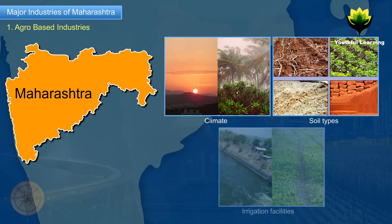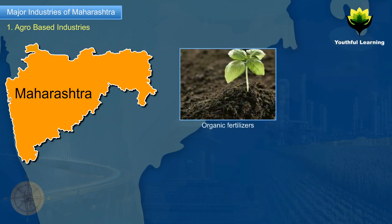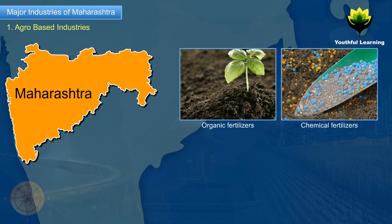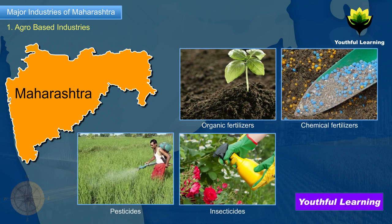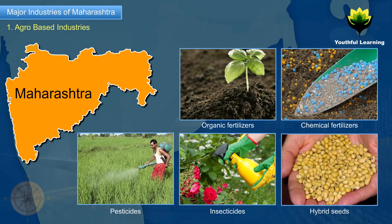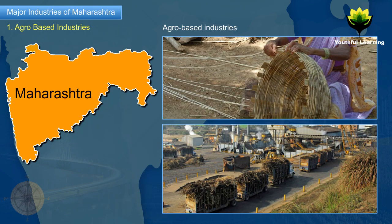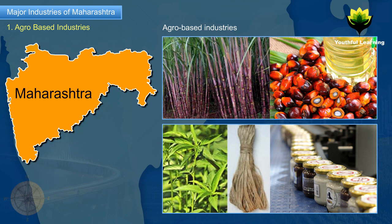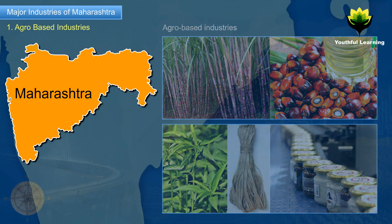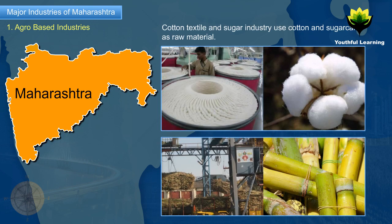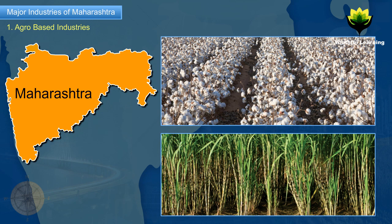Agro-based industries: The factors that make agriculture a profitable industry in Maharashtra are the climate, soil types, irrigation facilities, and the use of organic and chemical fertilizers, pesticides, insecticides, and hybrid seeds. The success of agriculture has led to the growth of agro-based industries in the state. Agro-based industries use agricultural produce as raw materials — for example, the cotton textile and sugar industry use cotton and sugarcane respectively, as these crops are grown on a large scale in Maharashtra.